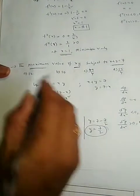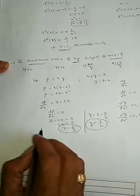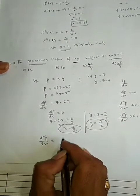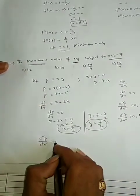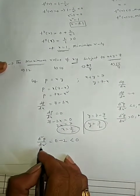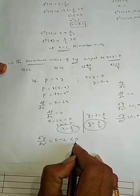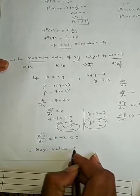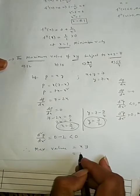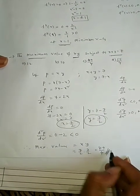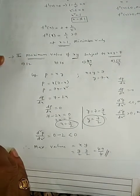You are asking the maxima value, so that depends upon the double derivative. d²p/dx² is equal to derivative of 7 which is 0, minus 2. So minus 2 is less than 0. Therefore, d²p/dx² is less than 0, so it is a maxima value. Therefore, the maximum value is equal to x·y, which is 7 by 2 into 7 by 2, equal to 49 by 4. So option C is the right option. Thank you.